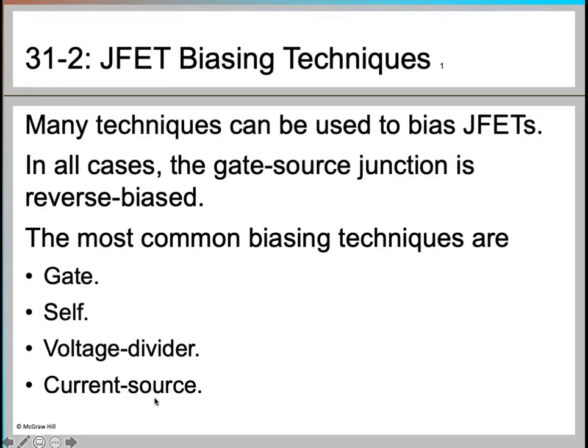Now moving on to JFET biasing techniques. Biasing is basically a process of establishing the proper operating voltage and current in the circuit such that the JFET can be operated in a specific region. You have seen different biasing techniques for BJT, which is your bipolar junction transistor, and now we are going to see the most commonly used biasing techniques in JFET.